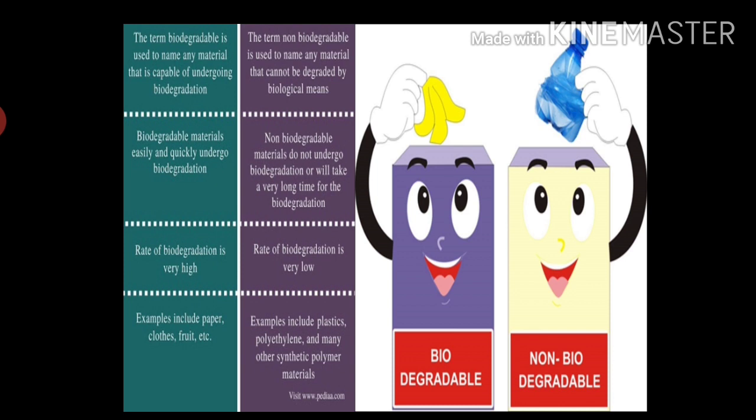Now what is biodegradable and non biodegradable materials? A material which gets decomposed through natural process such as action by bacteria is called biodegradable material. For example peels of vegetables and fruits, paper, wood, cotton, clothes etc. Materials which are not decomposed by natural process are termed as non biodegradable. For example tin, aluminium, metal cans and plastic. Plastic takes several years to decompose.